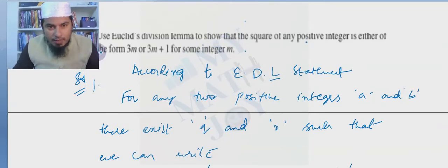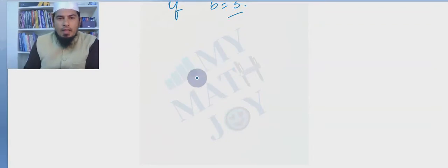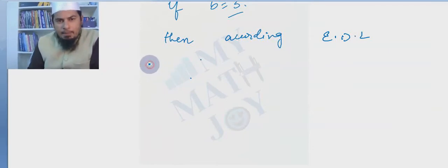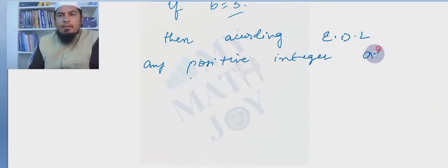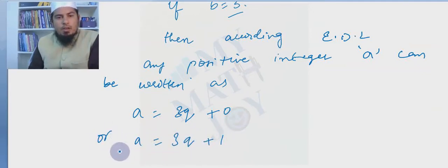If b = 3, then according to Euclid's division lemma, any positive integer a can be written as: a = 3q+0, or a = 3q+1, or a = 3q+2. These are the three possible cases. The question asks us to show the square of any positive integer is of the form 3m or 3m+1, so we will square both sides in each case.